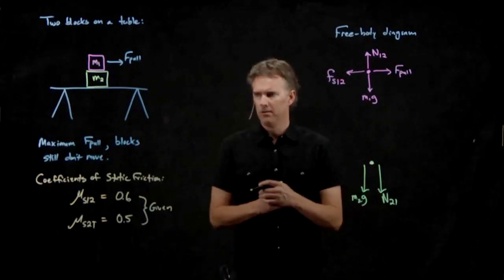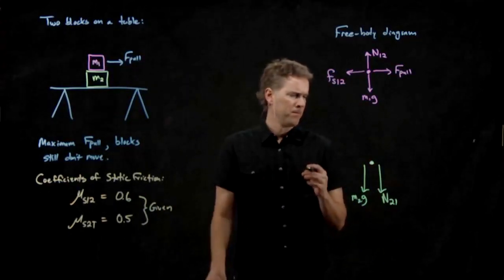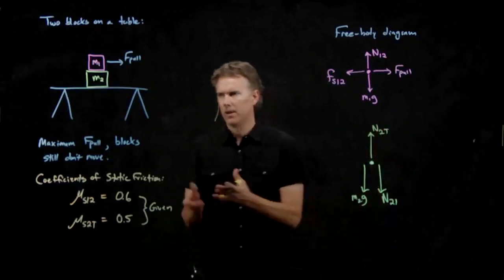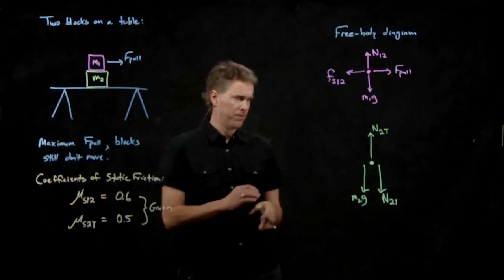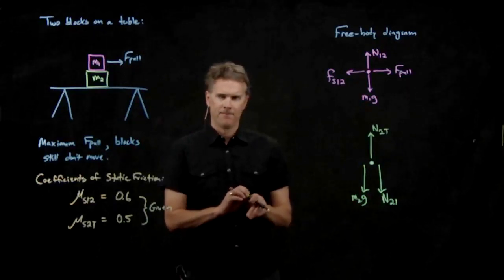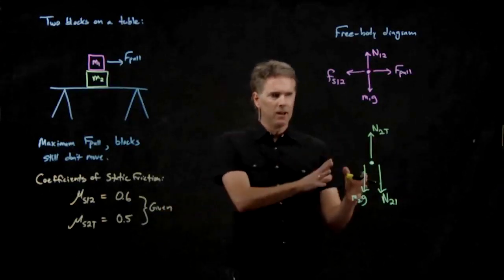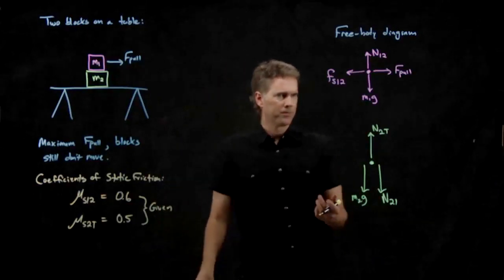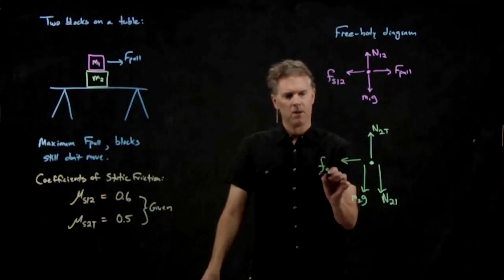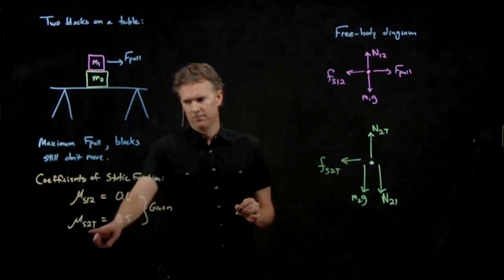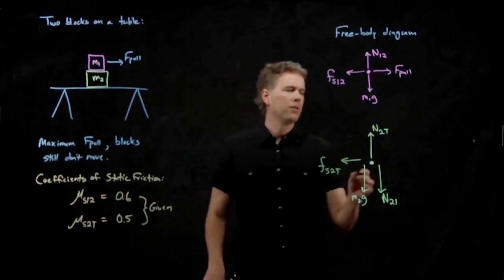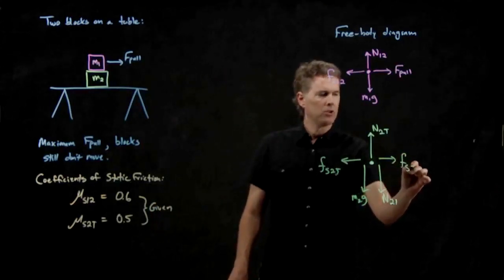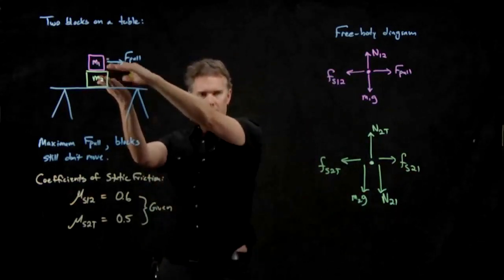Anything else? There's got to be something else if the whole thing's at rest, right? What's that? N2T. So there must be some normal force on two due to the table, right? The table is holding up block number two. What else? It's not moving, so this could be it. But we know that there's somebody trying to pull on this thing, and so there's got to be something else holding this whole thing in place, which is static friction on two due to the table. And then there is some force to the right to balance that out, which is what? It's F sub S two one, the static friction on two due to block one.